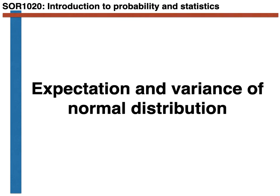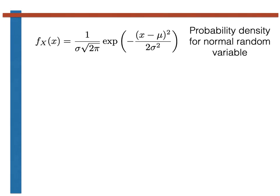Hello. By completing the various exercises before this and by working through them, you have now encountered and done a considerable amount with the normal distribution. In this video, we are going to derive expressions for the expectation and variance of this particular random variable. As a brief reminder, we have established that the probability density function for a normal random variable with parameters mu and sigma is given by the expression shown at the top of this slide. We are going to need this expression in order to calculate the expectation and variance.